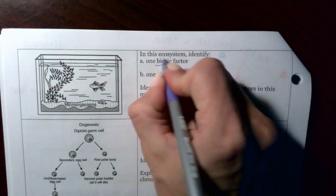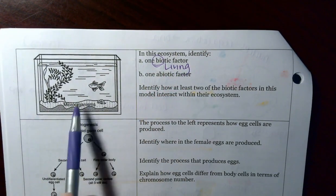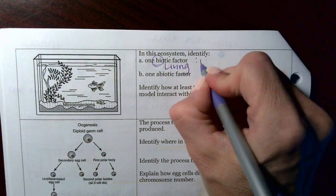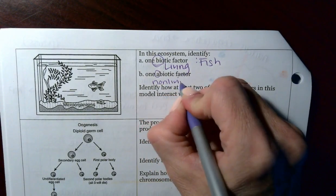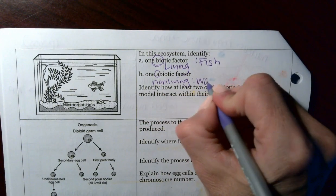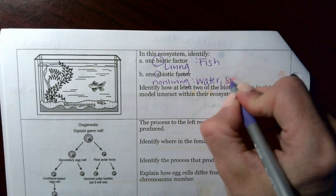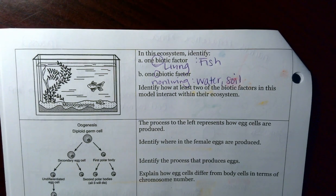Over here, we have the term biotic. Biotic means living. You could pick the fish, plant, microorganism, snail. Abiotic means non-living. Water, soil. You also could say, hey, there's a bunch of other things you can't see, like dissolved oxygen, dissolved carbon dioxide. That would work as well.